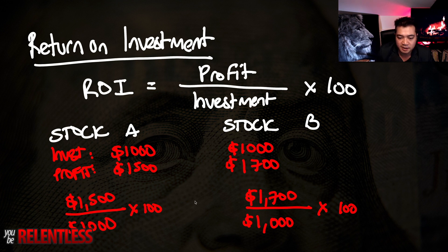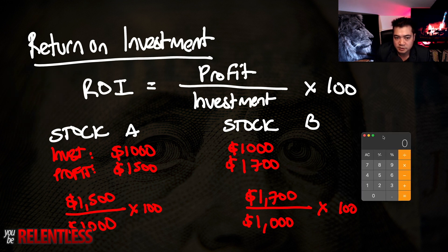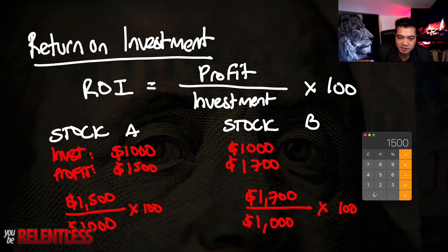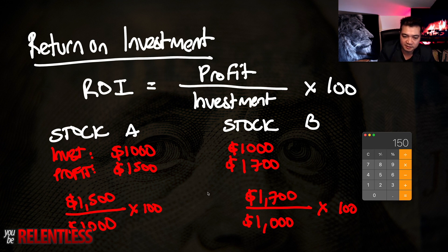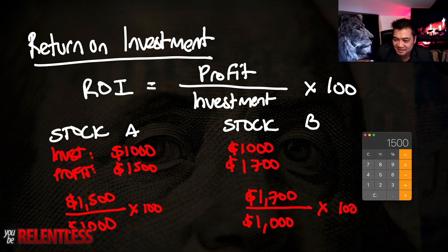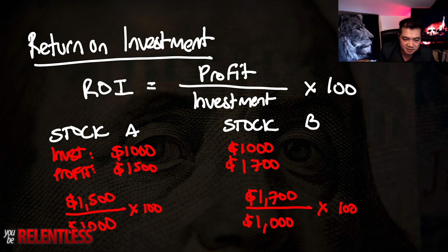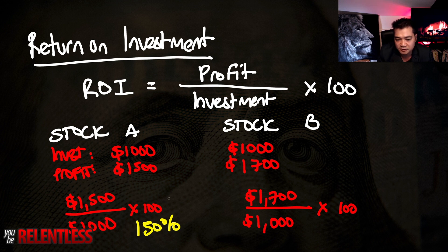Let me load up my trusty calculator. So let's look at stock A: $1,500 profit divided by $1,000 invested, times by 100 — equals 150%. So for this particular stock I've made a 150% return on investment. That's pretty good — I put down $1,000 and got $1,500 back.